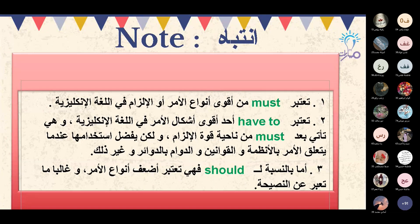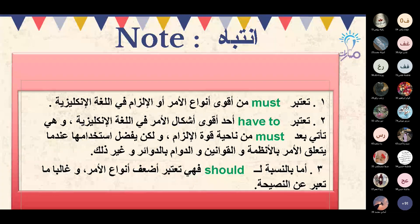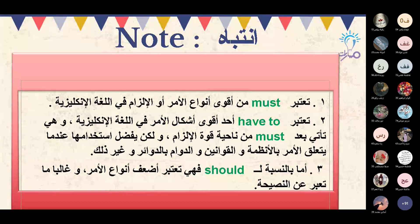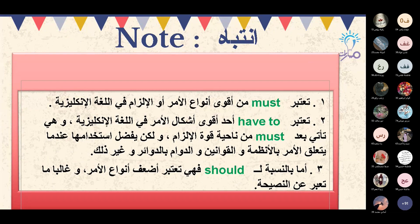الآن انتباه، في الدرس القادم عند حل الوظائف قد تختلط عليكم الأمور. فلنفهم الفرق بين must وhave to وshould. أولاً: تعتبر must من أقوى أنواع الإلزام في اللغة الإنجليزية، وتُستخدم عندما يكون الأمر ضرورياً أو خطيراً جداً.